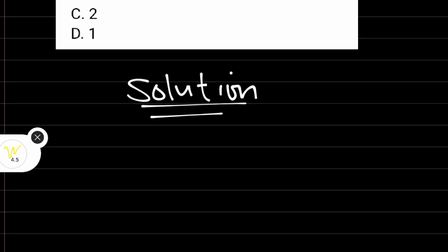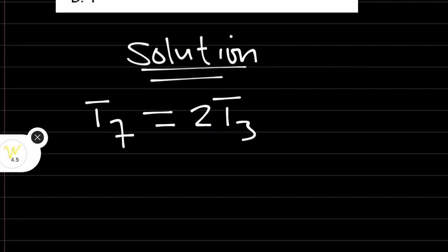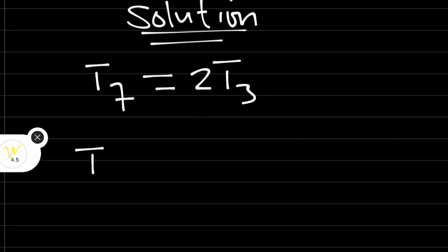Solution. According to the question, the seventh term is twice the third term. The seventh term will be given like this. The seventh term of an AP is equivalent to A plus 6D.